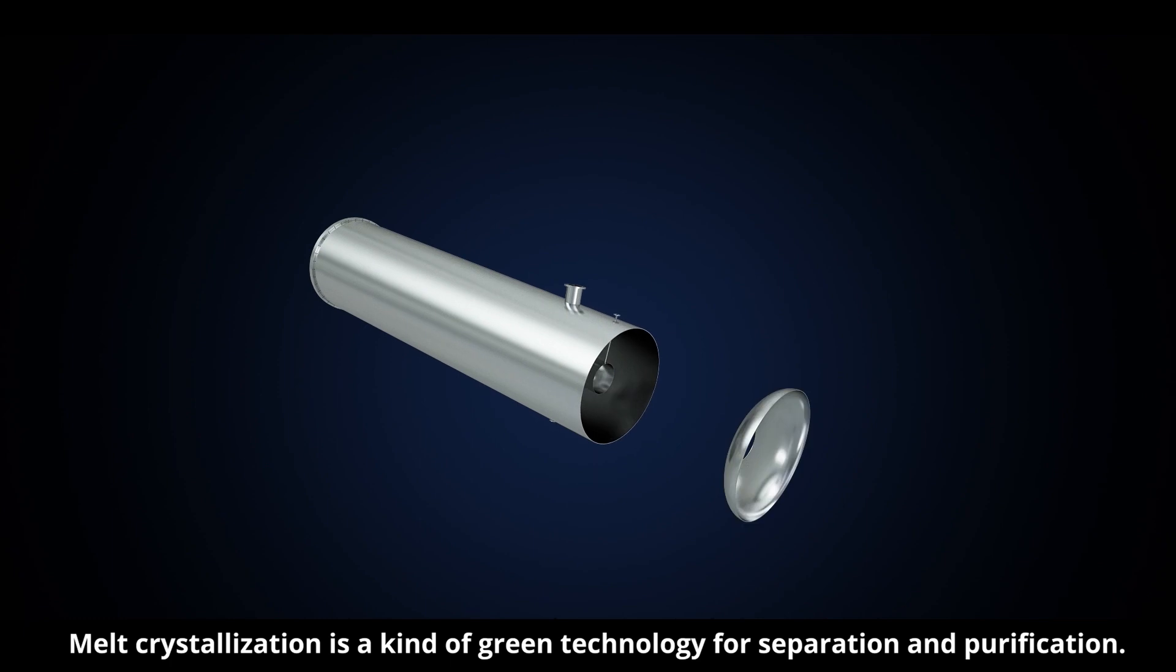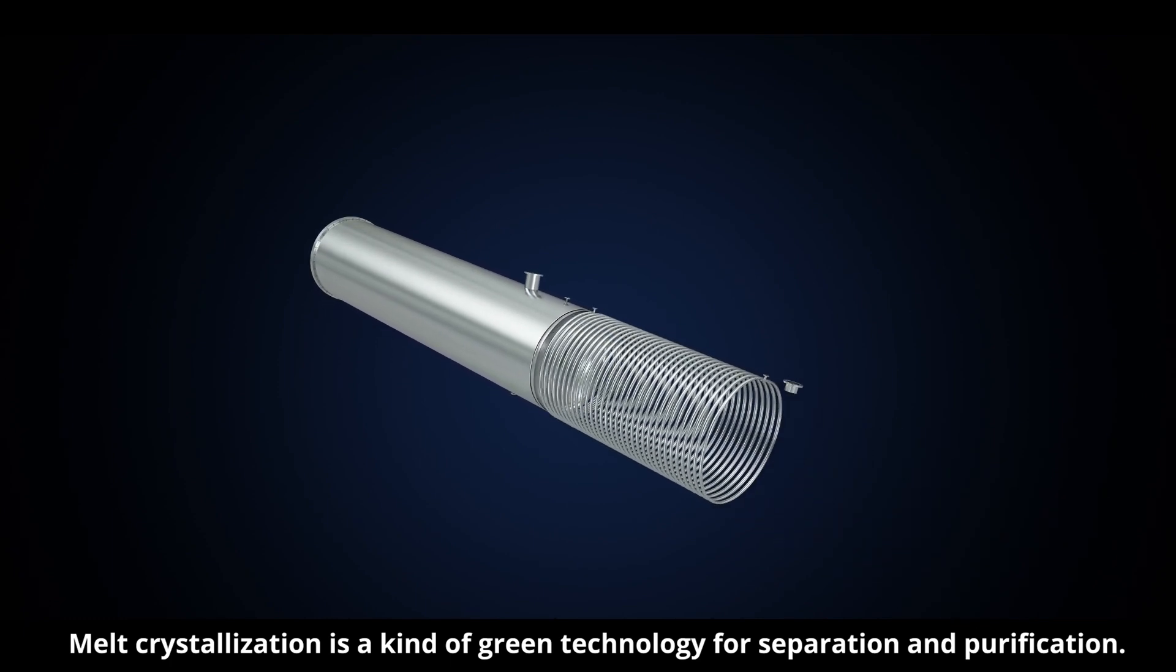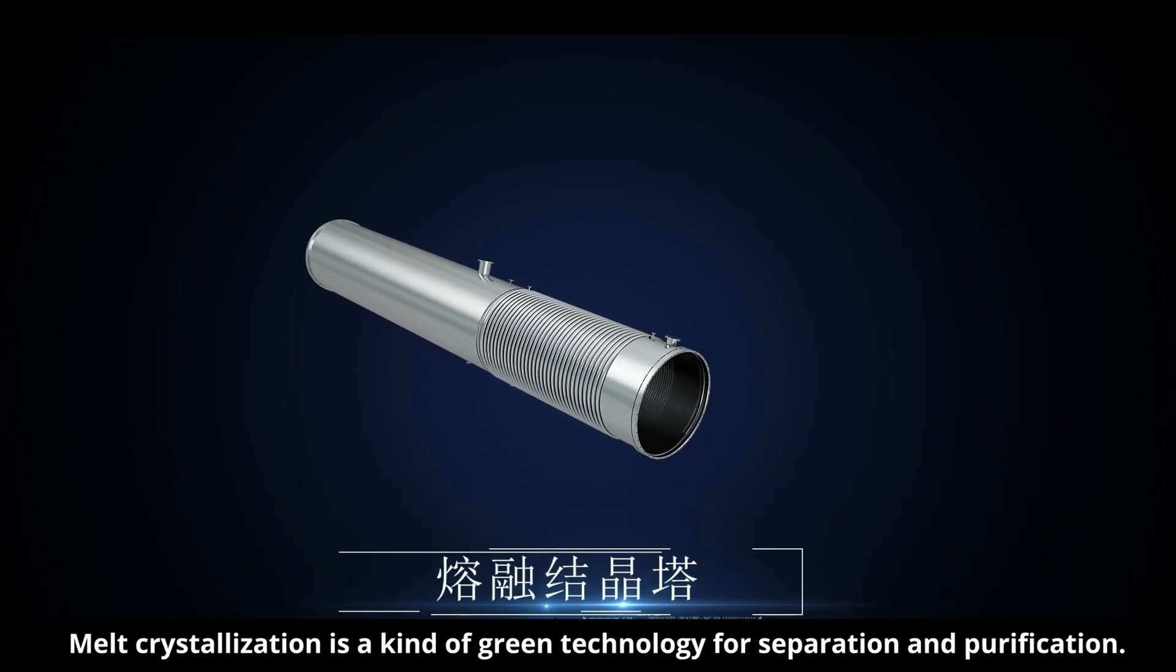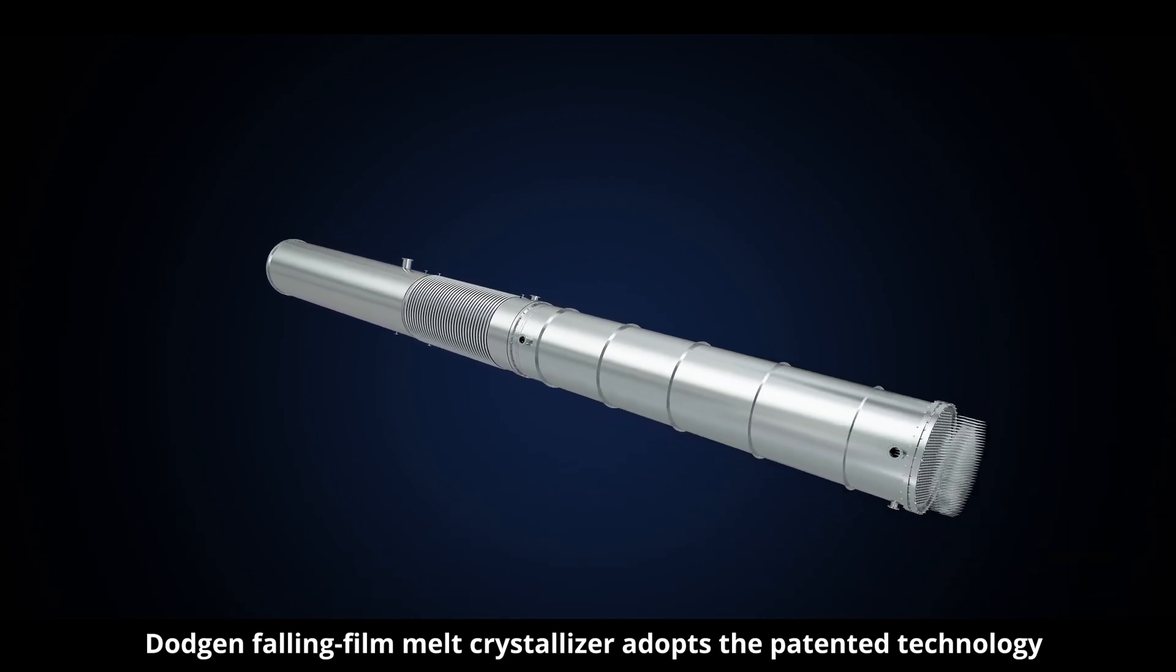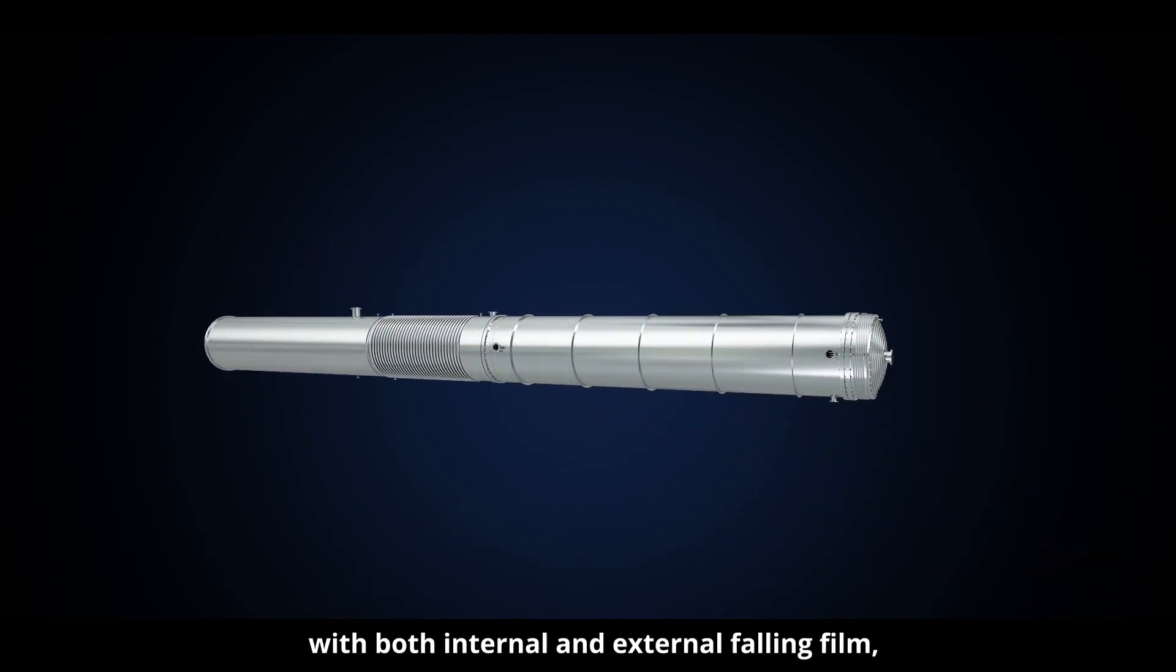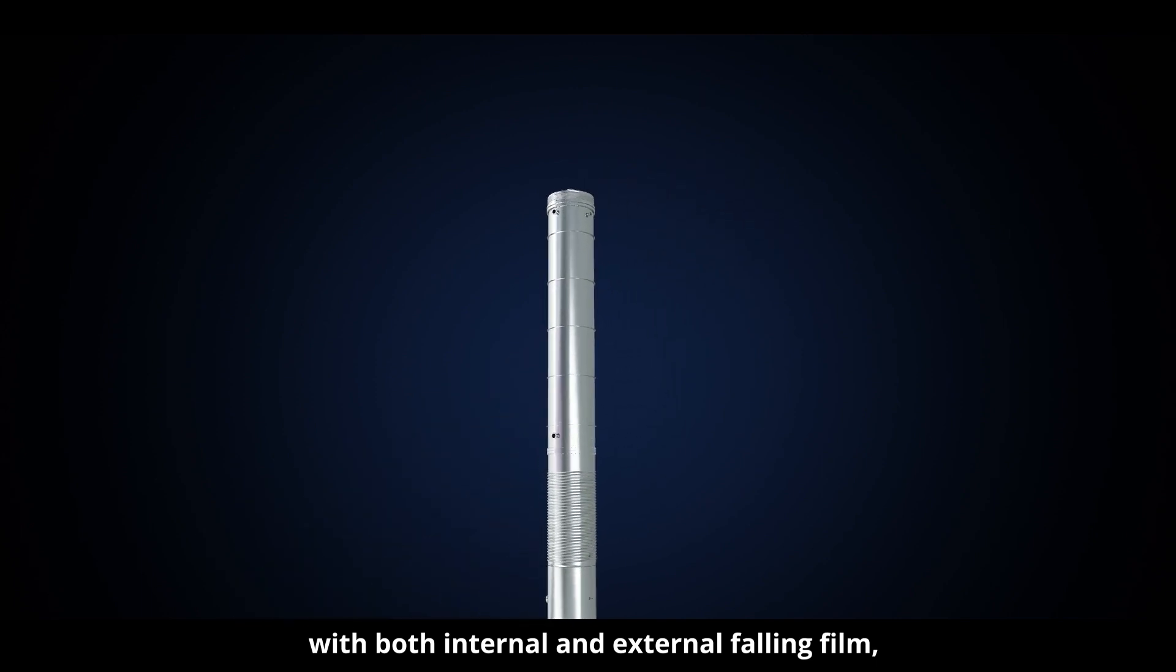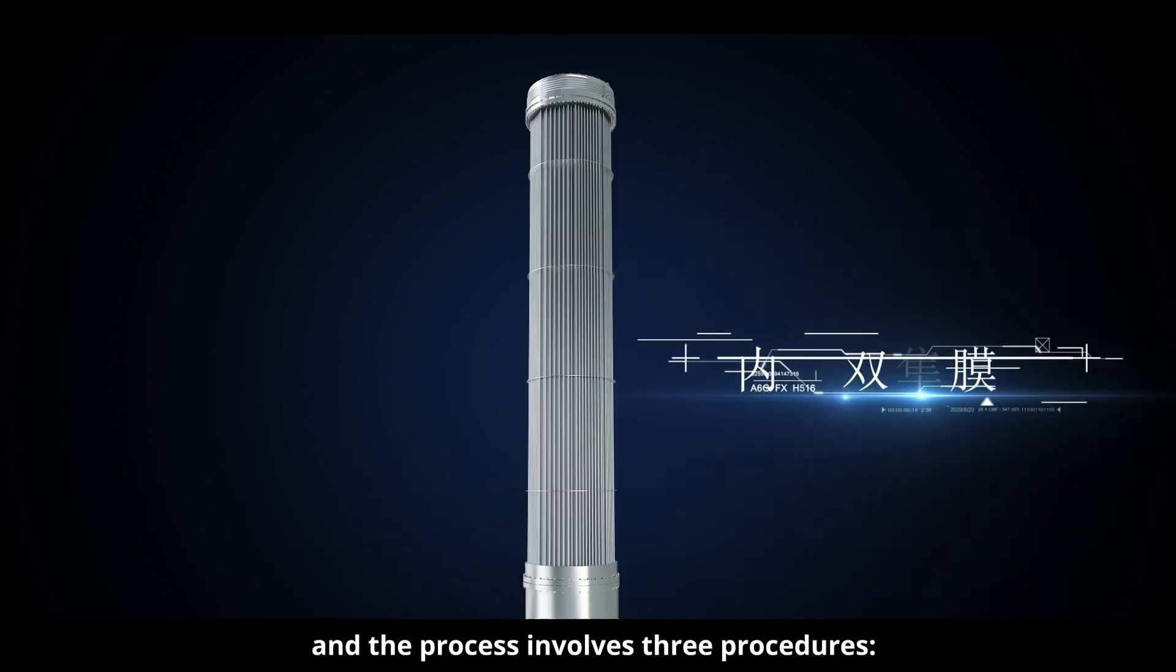Melt crystallization is a kind of green technology for separation and purification. Donggang Falling Film Melt Crystallizer adopts the patented technology with both internal and external falling film.